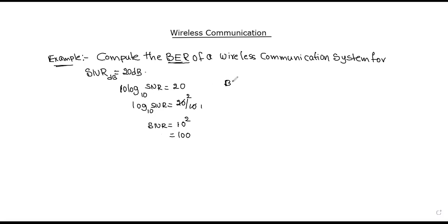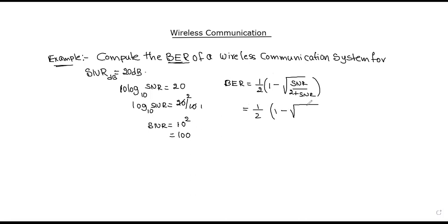Now the bit error rate formula — which I covered in the last video — is: average bit error rate equals 1/2 minus the square root of SNR divided by (2 plus SNR). Substituting SNR = 100: 1/2 minus the square root of 100 divided by (2 plus 100). Using a scientific calculator, the bit error rate equals 4.92 × 10⁻³.